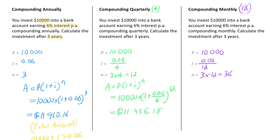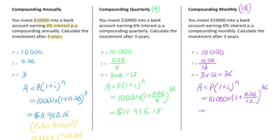Once those three values are defined, we write the formula: A equals P times 1 plus I to the power of N. Substituting in: 10,000 times 1 plus 0.06 over 12, to the power of 36. Putting that into the calculator gives an answer of $11,966.81 — the total value if compounding monthly at the end of three years.